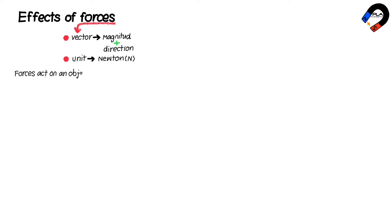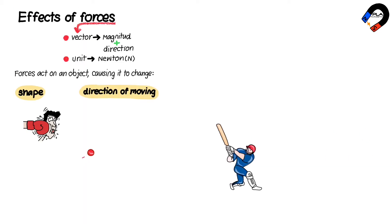Effects of forces on objects: Force is a vector quantity that has both magnitude and direction. Its unit is the Newton (N). When forces act on an object, they can cause the object to change its shape, direction of moving, or speed.